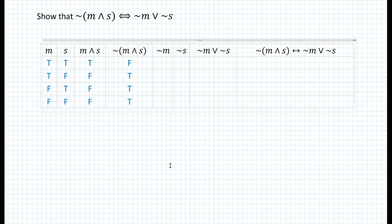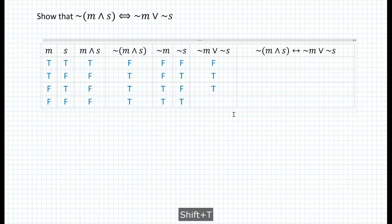Now we have not M, which becomes false, false, true, and true. And for not S, we refer back to column two and get false, true, false, and true. Now looking at not M or not S — for a disjunction, at least one of them has to be true for it to be true. So the result is false, true, true, and true. Looking at column four and column seven, we can see that the truth values are the same.